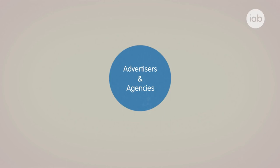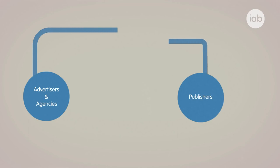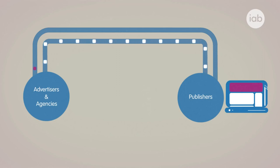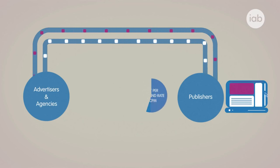In the beginning, an advertiser or an agency representing an advertiser would work directly with a publisher to purchase ad space on their website. This could be done on a tenancy basis, with every visitor to the website being shown the same message, or the advertiser could purchase a share of the total impressions paid for at a cost per thousand rate.